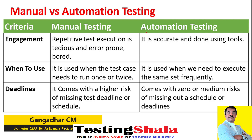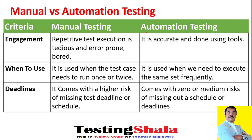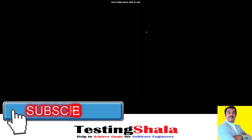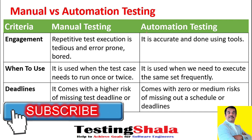The risk in manual testing is very high because it consumes a lot of effort and resources, with a higher risk of not meeting deadlines — someone might leave the company or face other challenges. With automation, the risk can be zero or medium, and schedules and deadlines can be easily accommodated using automated testing. These are the important aspects of manual testing and automation testing and their differences.